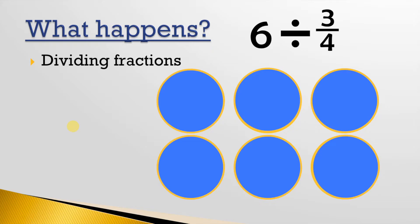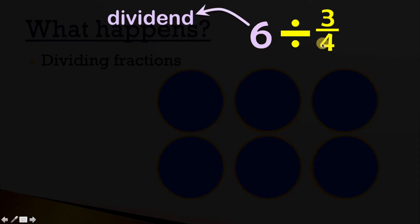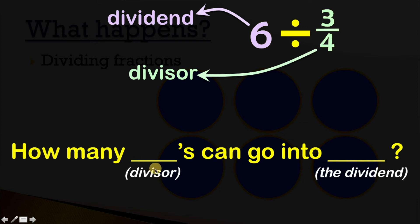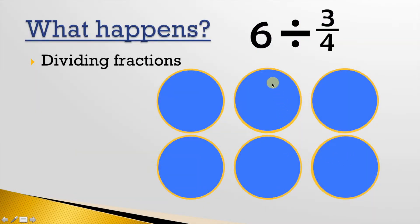Now let's talk about this example where we have a whole number and a fraction. Let's go back to our terminology. We've got 6 divided by three-fourths, where 6 is our dividend and three-fourths is our divisor. Again, we'll go back to that question: how many divisors can go into the dividend? So we're basically asking how many three-fourths can go into 6.